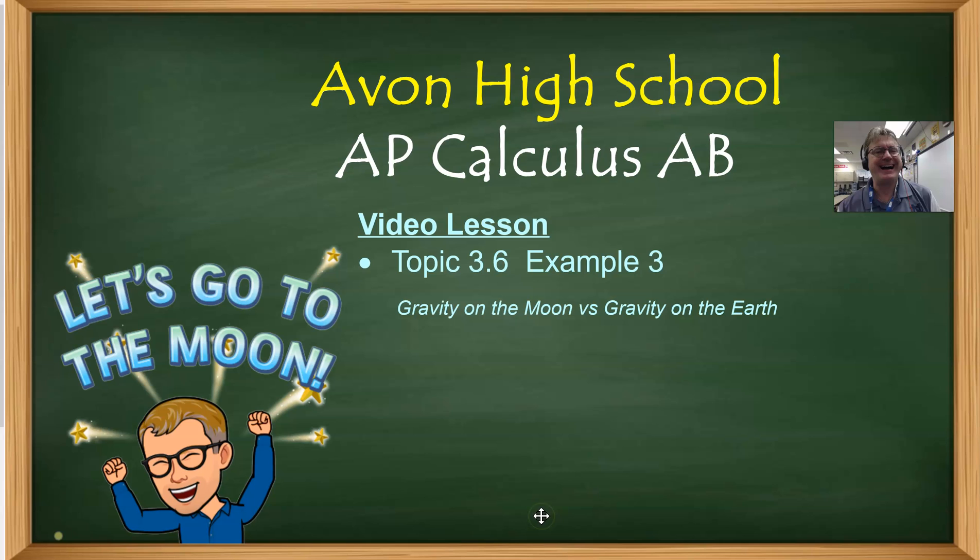And 3.6 is all about taking higher order derivatives. We've had a little bit of practice at that with the first two examples. And in our second example, we're going to revisit this idea of motion of an object that's falling, but we're going to go to a different location. We're going to go to the moon and we're going to figure all of this out. So we have gravity on the moon versus gravity on the earth.